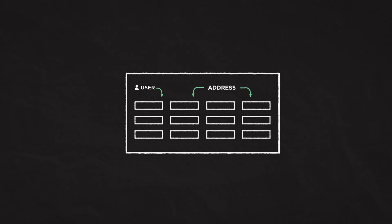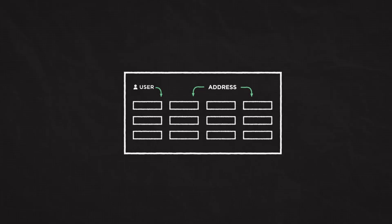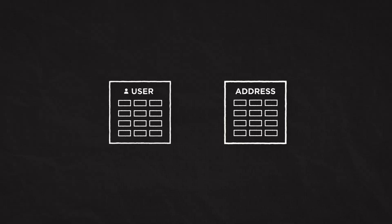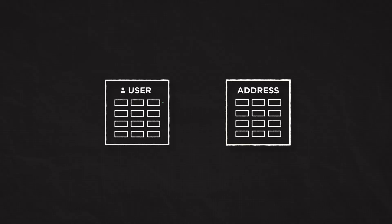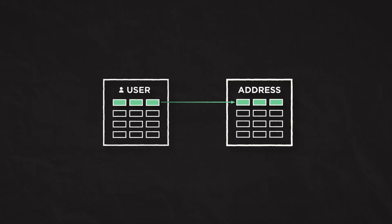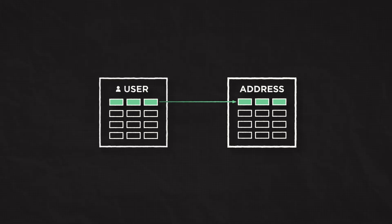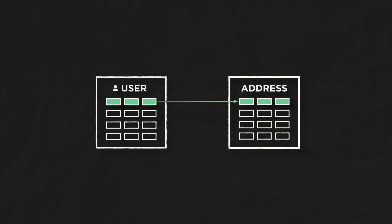Those address columns may just be null if we don't yet have an address for the user, and they may be irrelevant to the majority of queries. So we could separate those columns into their own addresses table, set up a one-to-one relationship, and then join on that table only when we specifically want address data.